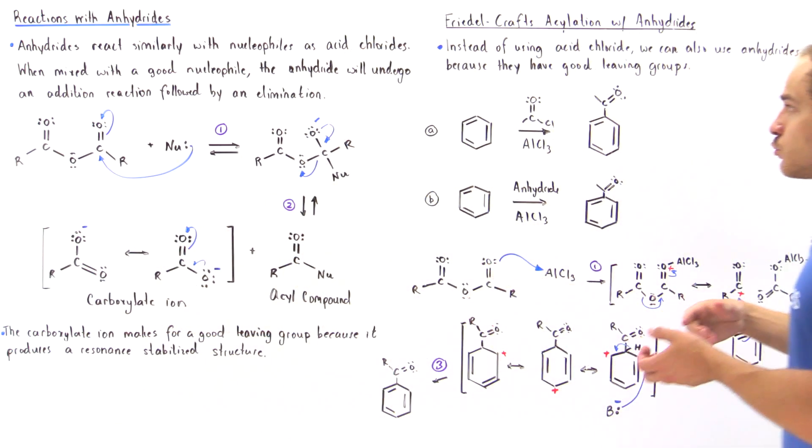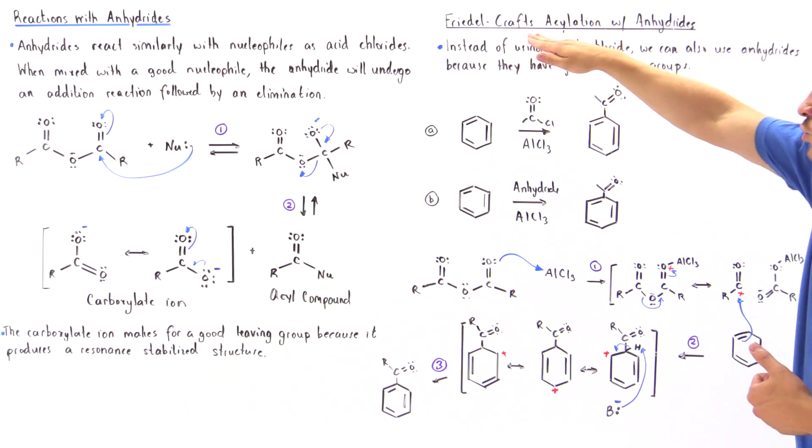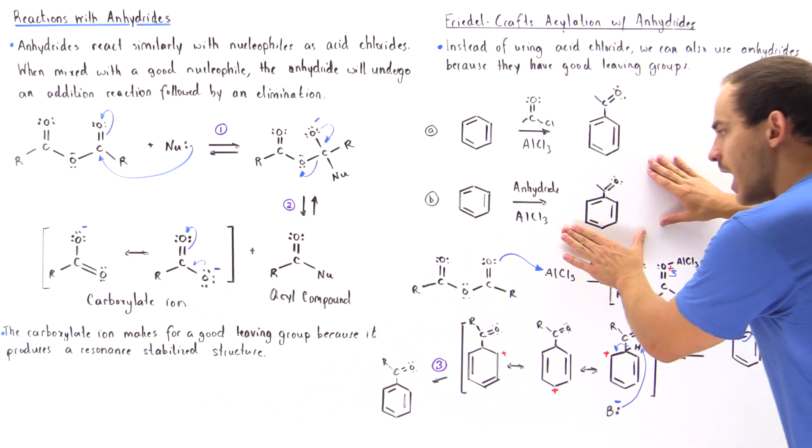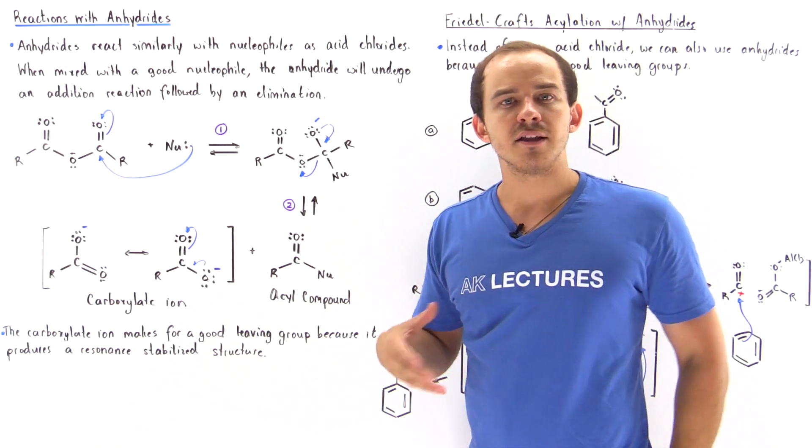we can actually replace the acid chloride in the Friedel-Crafts acylation with our anhydride and the reaction final product will be exactly the same.